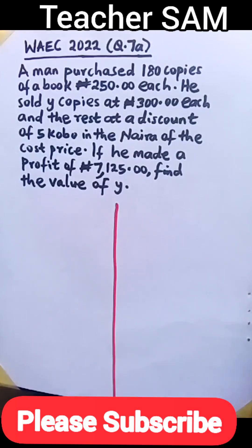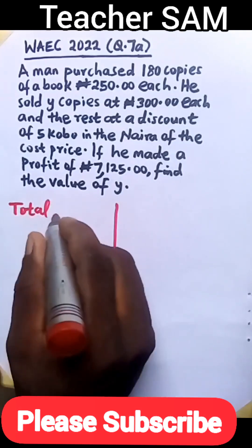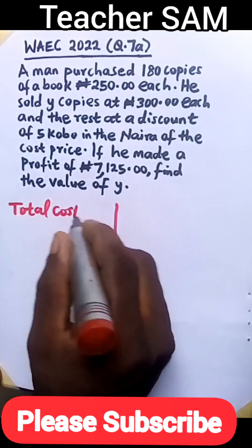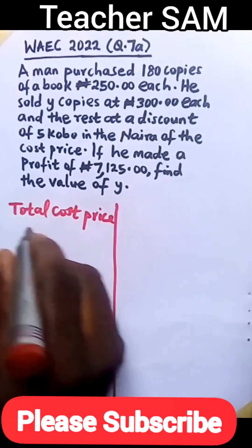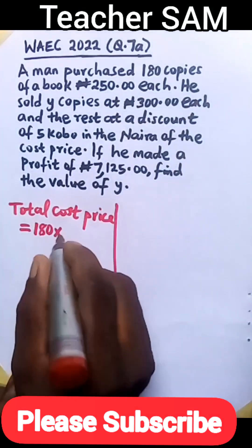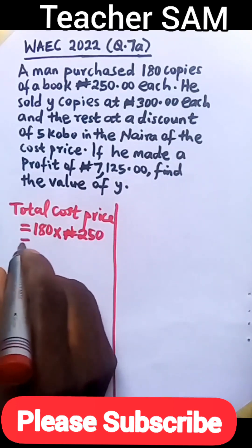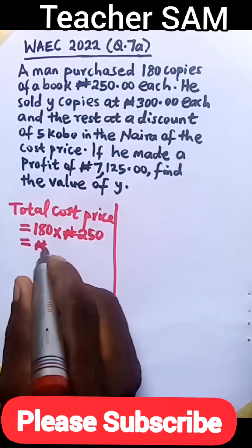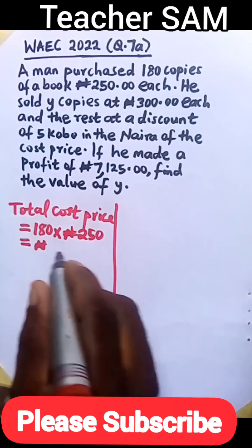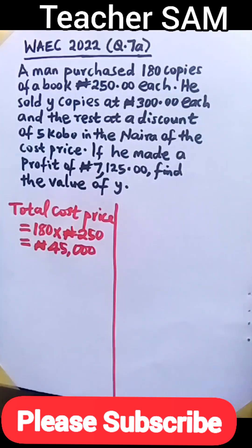Let's solve this profit and loss problem. First, let's get the total cost price of the books. The total cost price is 180 copies times the cost of each copy, which is 250 naira. So 180 multiplied by 250 gives us 45,000 naira. That is our total cost price.